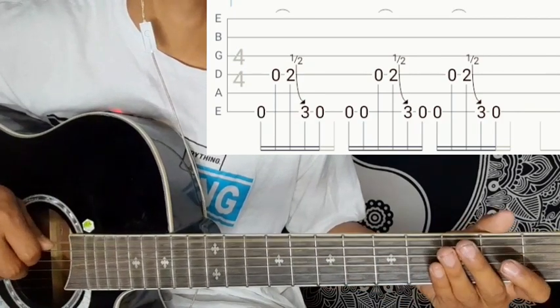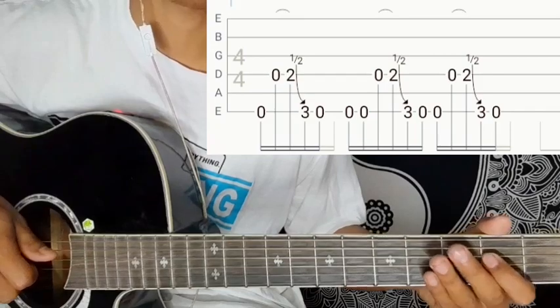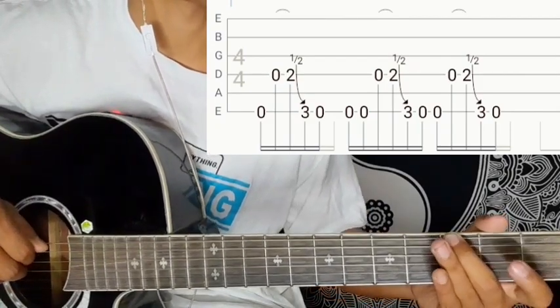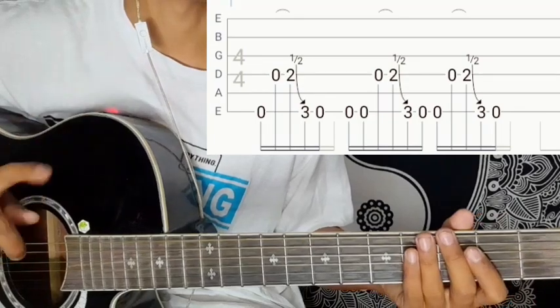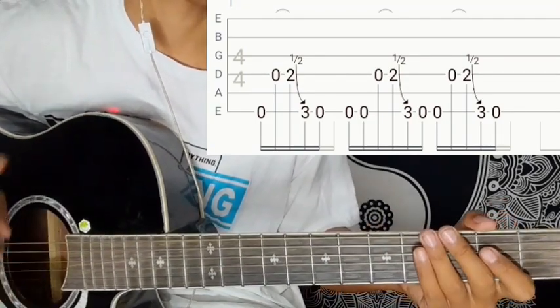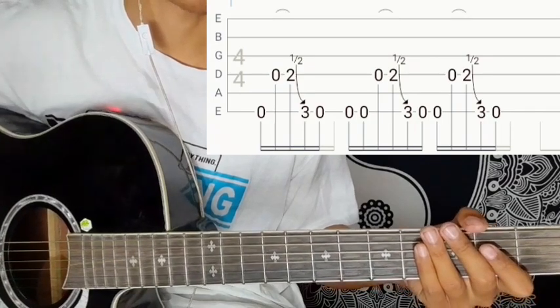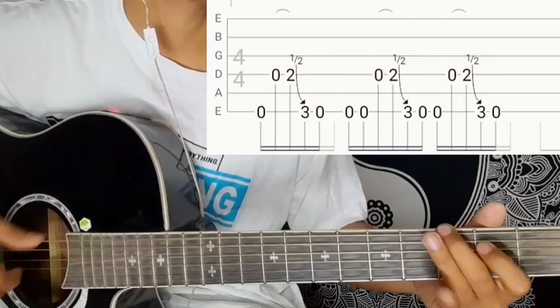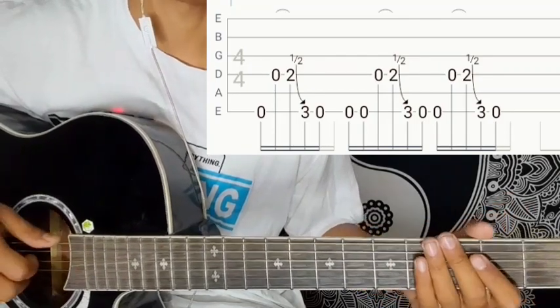E minor: sixth string open, fourth string open with hammer-on, the bending, sixth string and third string open. Practice this line many times, then back to E minor.